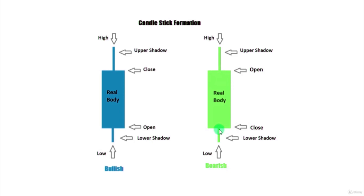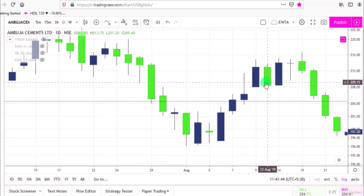In a red candlestick, this is the opening price, this is the closing price, this is the lower shadow, this is the upper shadow, this is the high of the candle, and this is the low of the candle. We can also change the colors of these candlesticks, but the most basic colors are green and red.